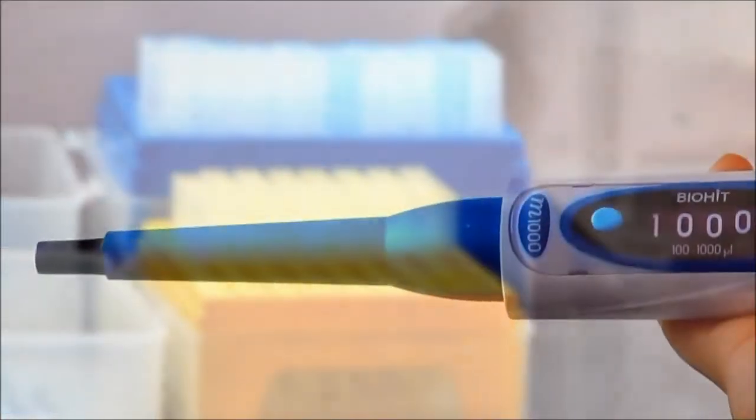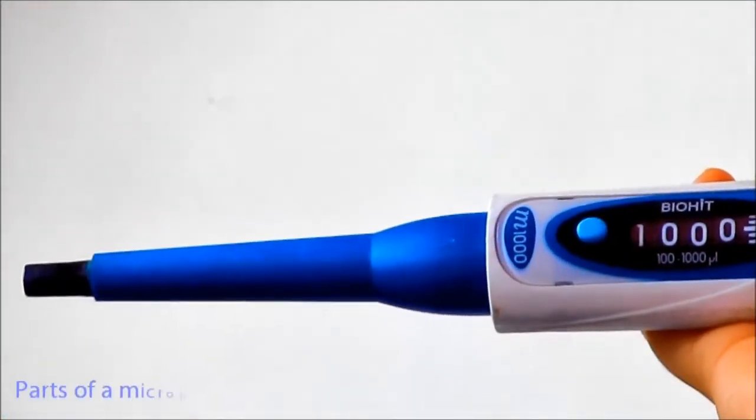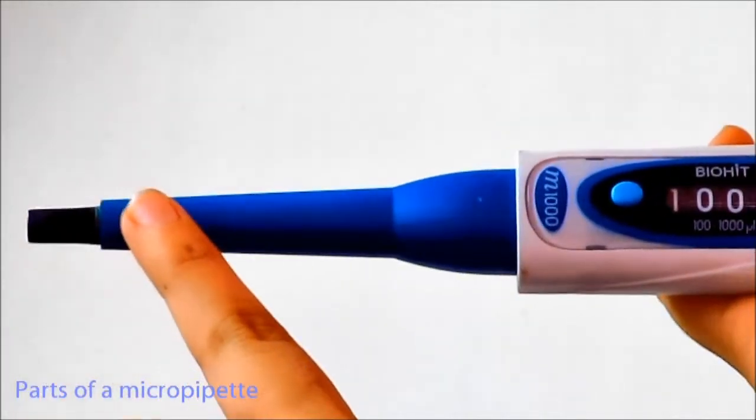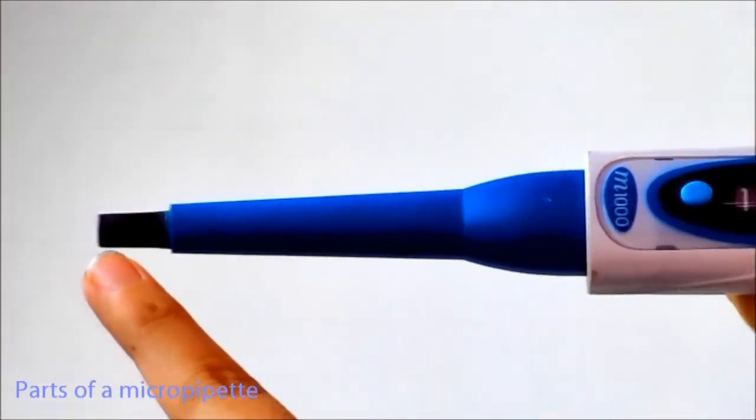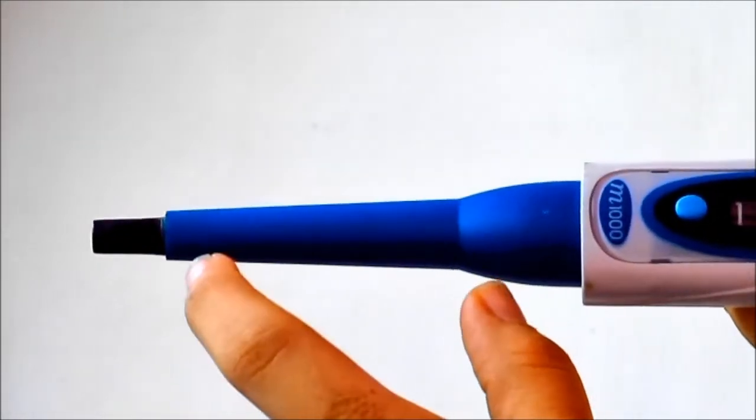Parts of a micropipette. The first part which is black in color is called the tip ejector arm. Following that is a broader part which is called plastic shaft.